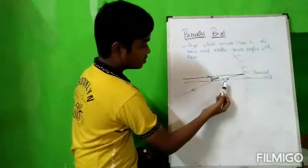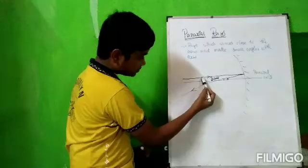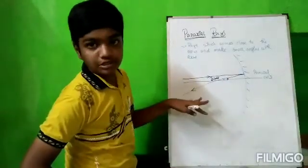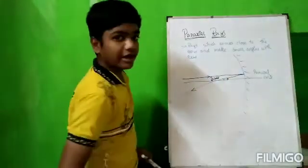This is the principal axis which comes close and makes small angles. Theta equals small angles. Then it is called paraxial rays.